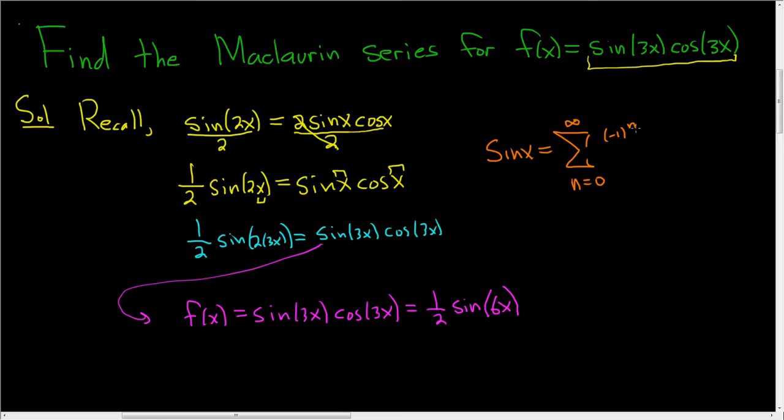Sine is an odd function, so the exponent is an odd number. So it looks like 2n plus 1. If it was cosine, you would just have a 2n, and that's because cosine is even. It's just a cheap trick to memorize the formula.